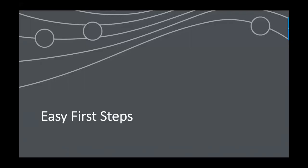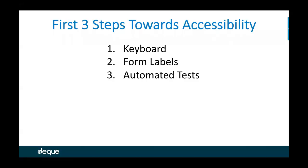With that landscape of WCAG 2.0 and 2.1 A and AA in place as your objective measure, what are some easy first steps you can take? If you're brand new to this field and wondering how to get started — three first steps: keyboard, form labels, and automated testing. I can teach anyone how to do these.